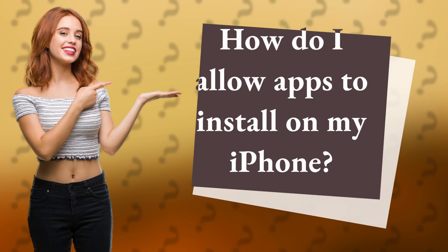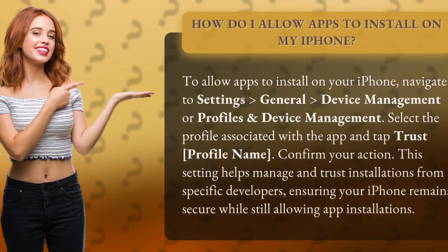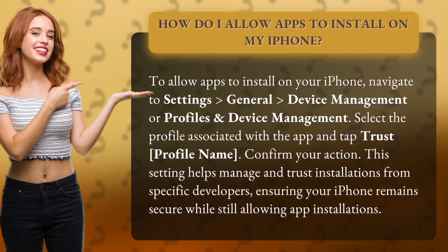How do I allow apps to install on my iPhone? To allow apps to install on your iPhone, navigate to Settings, General, Device Management or Profiles and Device Management.